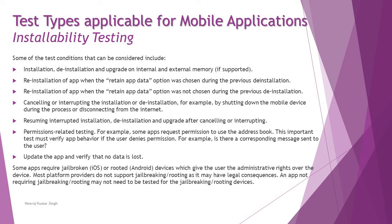Permission-related testing is another important area. Some apps request permission to use your address book or other device features. Tests must verify app behavior if the user denies permission — for example, is a corresponding message sent to the user? Many apps today prompt for microphone, speaker, or camera access. Responsible apps ask only when you use that feature, but some apps ask for unnecessary permissions at install time — which could indicate spam or privacy risks.